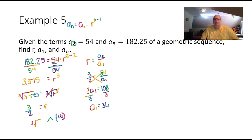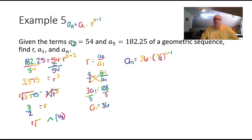Finally, we write the general formula for a_n. So a_n equals 36 times (3/2) to the power n minus 1. This formula should generate a sequence with 54 in position 2 and 182.25 in position 5.